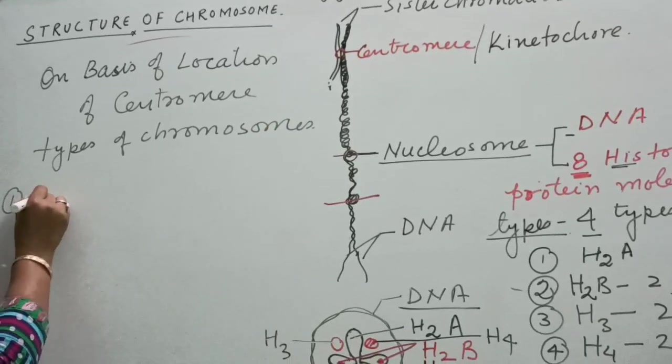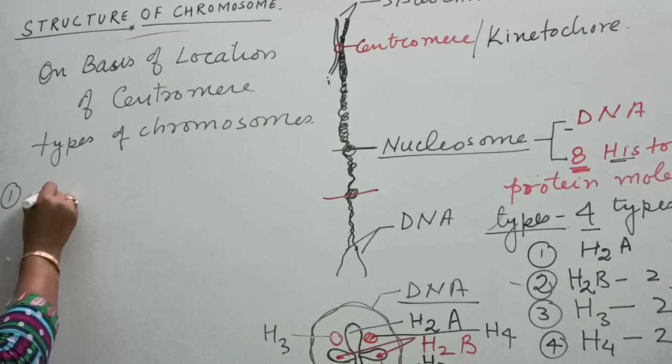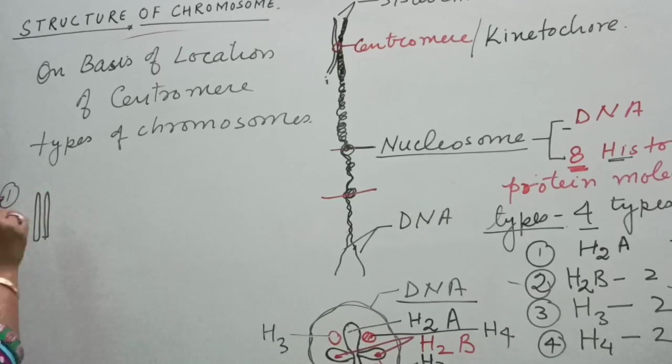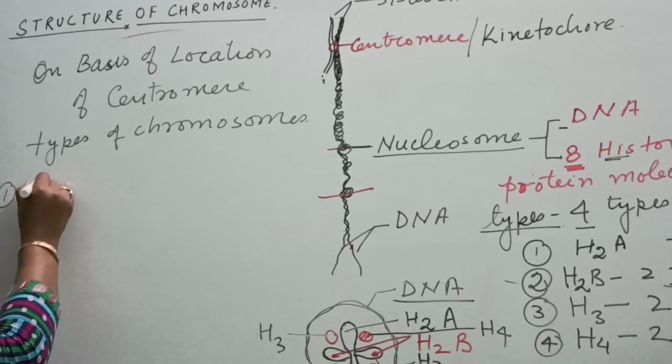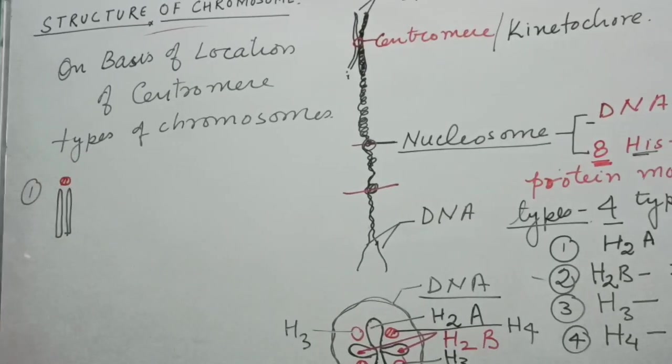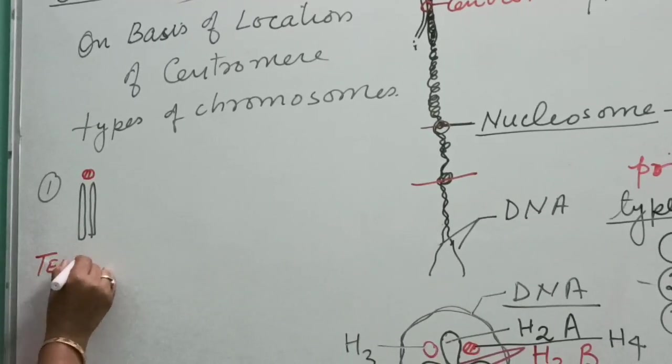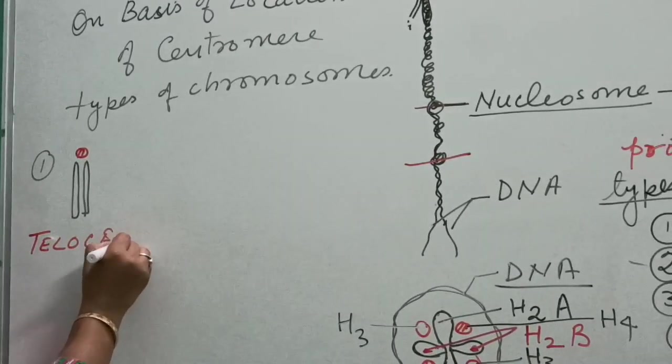Number one, two sister chromatids are clearly visible, but the centromere is present at one end. It is termed as telocentric.